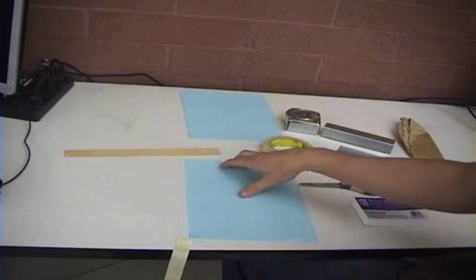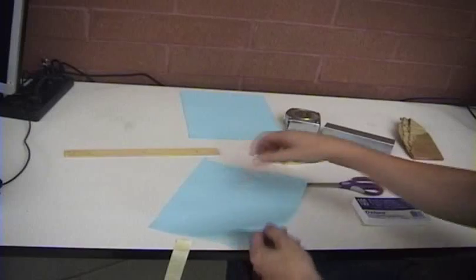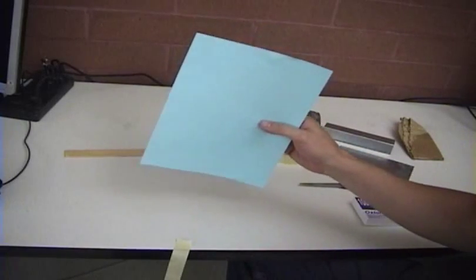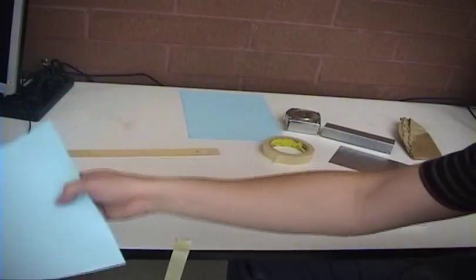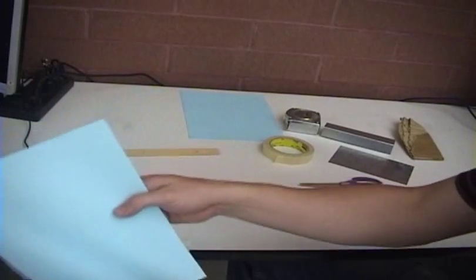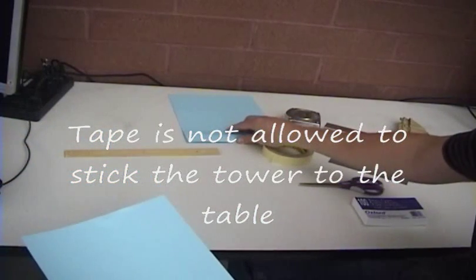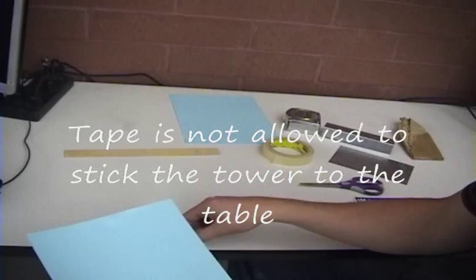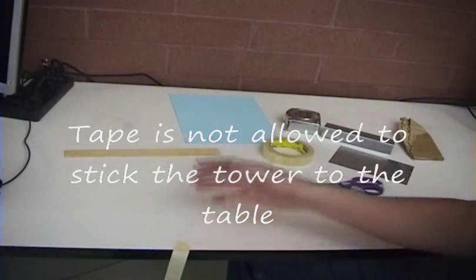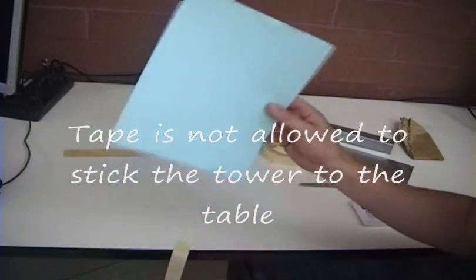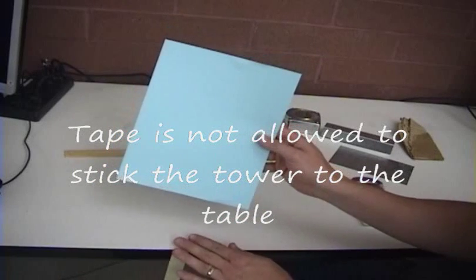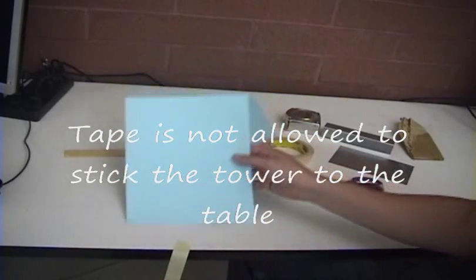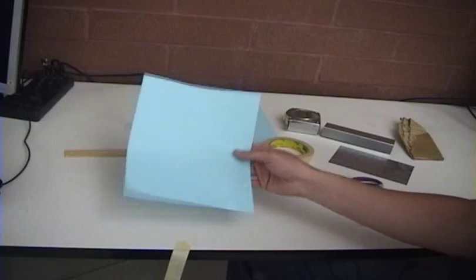So as far as rules go for the paper tower, only one sheet of paper. If you mess up, you can return all the paper and get a new sheet of paper. And if you use any tape, you can get more tape so that you're using a total of one sheet of paper and one foot of tape in the tower. But if you do make a mistake, I do allow people to start over.